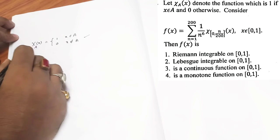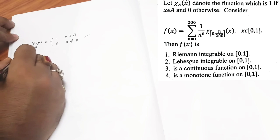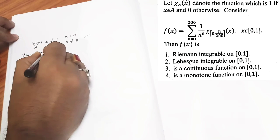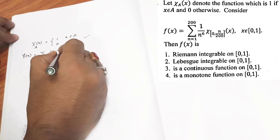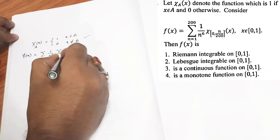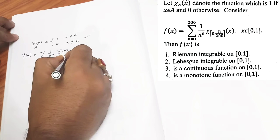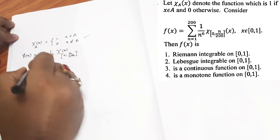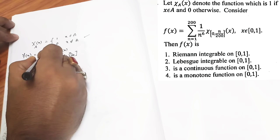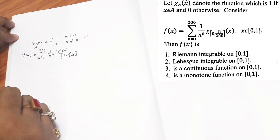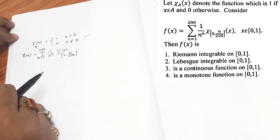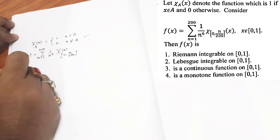Using that indicator function they have constructed a new function f(x) like this: 1 by n to the power 6, χ of (0, n/200), where n runs from 1 to 200. This function we have in our hand.